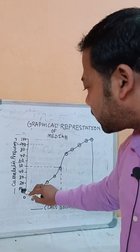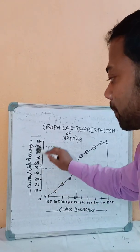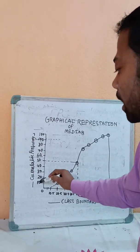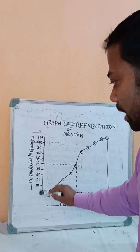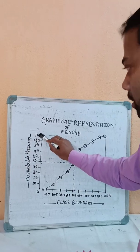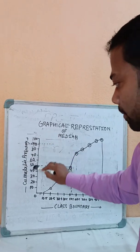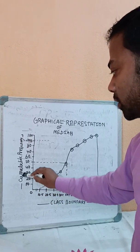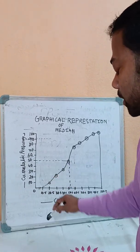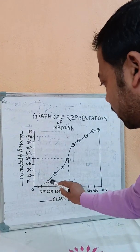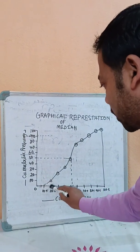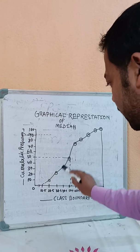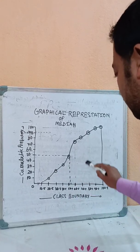The scale increment is 10 and 20 per unit. We plot the class boundary against the cumulative frequency: for example, 20.5 is plotted against 8, which is the cumulative frequency for that class.